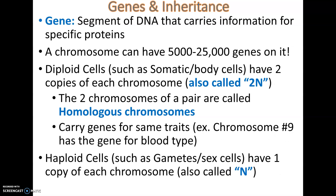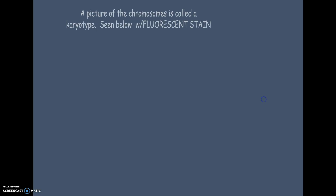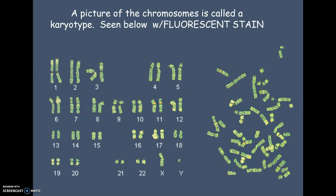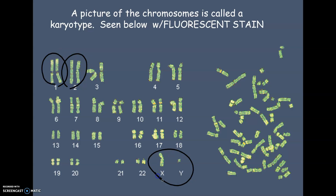Haploid cells — in humans, only sex cells or gametes, meaning sperm and egg cells — have only one copy of each chromosome. This is called the haploid number, or the n number of chromosomes. In a karyotype we're looking at the diploid number: two copies of chromosome one, two copies of chromosome two, and two sex chromosomes.